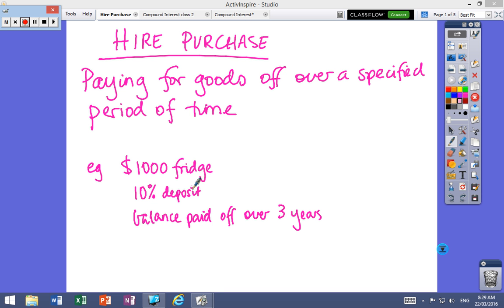Okay, so an example might be you've got a $1,000 fridge, you make a deposit and then you pay off the rest over three years.